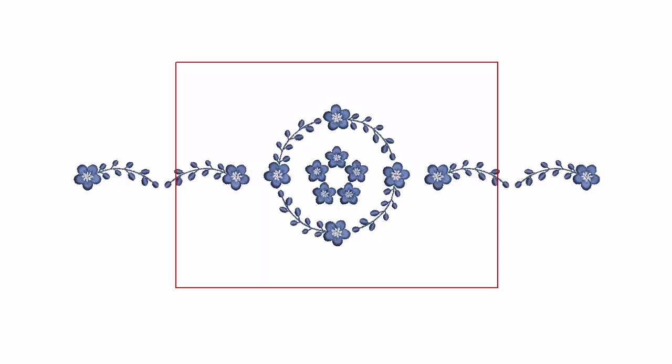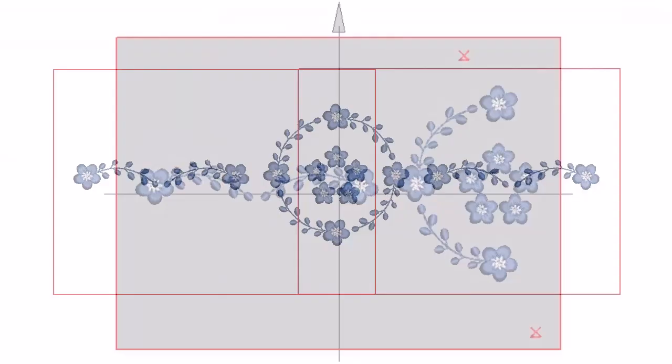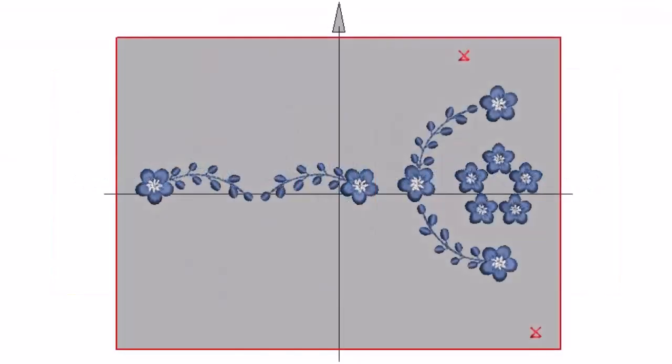If your embroidery is too large for your available hoops, you can use Embroidery Studio's hooping mode to split it into multiple hoopings. These can be stitched consecutively to form the entire design.